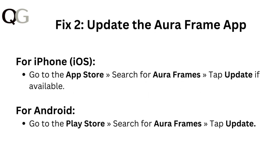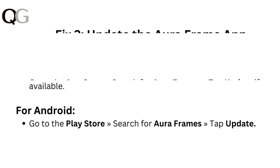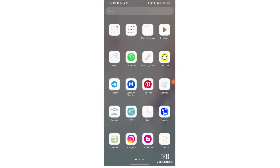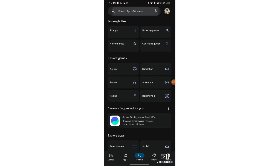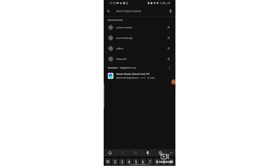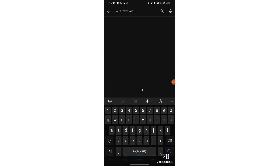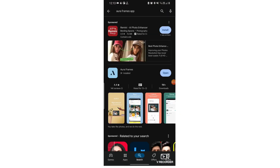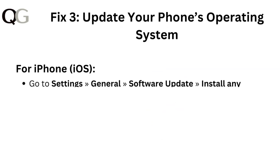Fix 2: Update the AuraFrame app. For iPhone, go to the App Store, search for AuraFrames, and tap Update if available. For Android, go to the Play Store, search for AuraFrames, and tap Update.